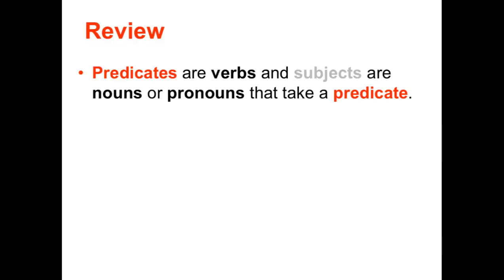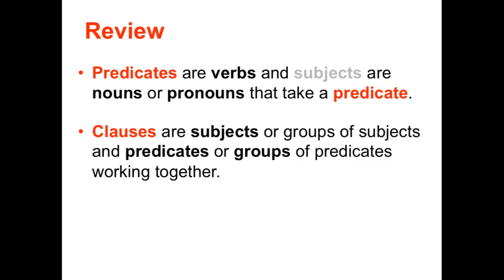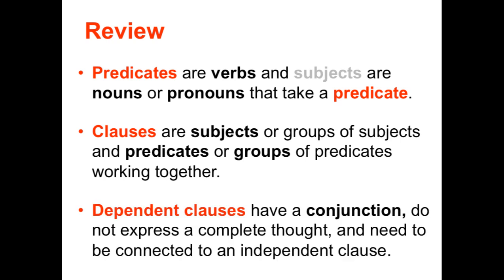In review: predicates are verbs. Subjects are nouns or pronouns that take the predicate. Objects are nouns or personal pronouns that do not take predicates. A clause is a subject and a predicate working together, or a group of subjects and predicates working together. Dependent clauses have conjunctions. Conjunctions make dependent clauses depend on independent clauses in order to express complete thoughts.